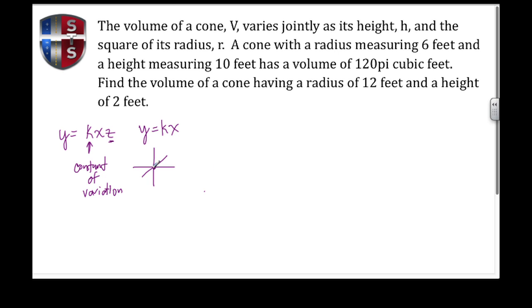Also, if it's a joint or direct variation, we're going to always go through the origin at (0,0) if depicted on a graph. Let's read the question: The volume of a cone V varies jointly as its height h and the square of its radius r.